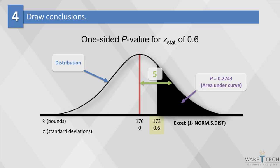In one sample with a sample mean of 173, the z-statistic was .60. If we had this sample, we would fail to reject the null hypothesis that the mean weights have increased over time.